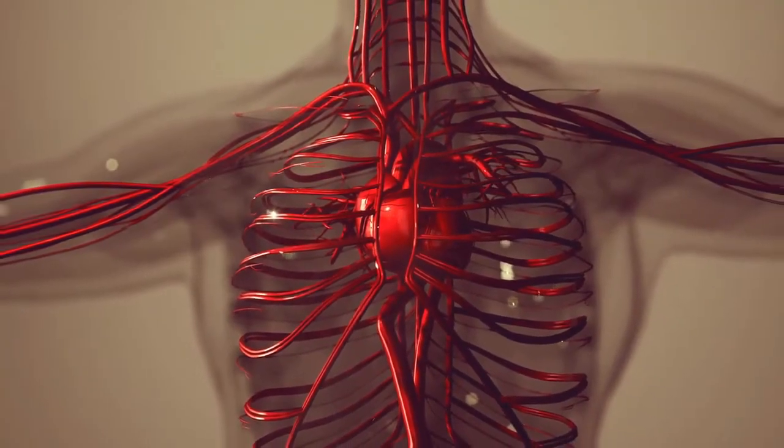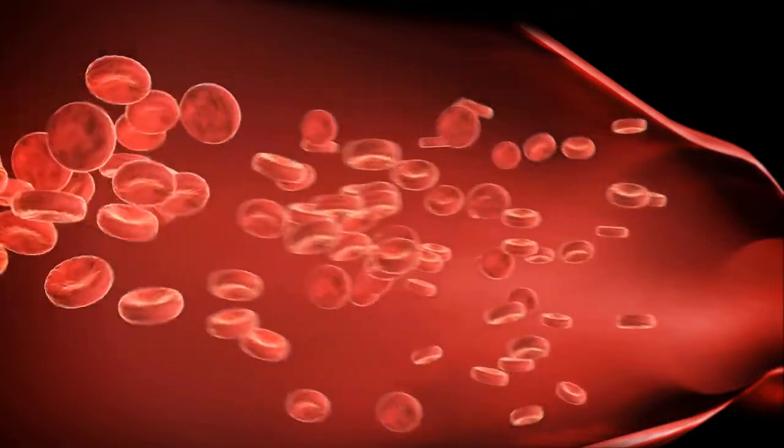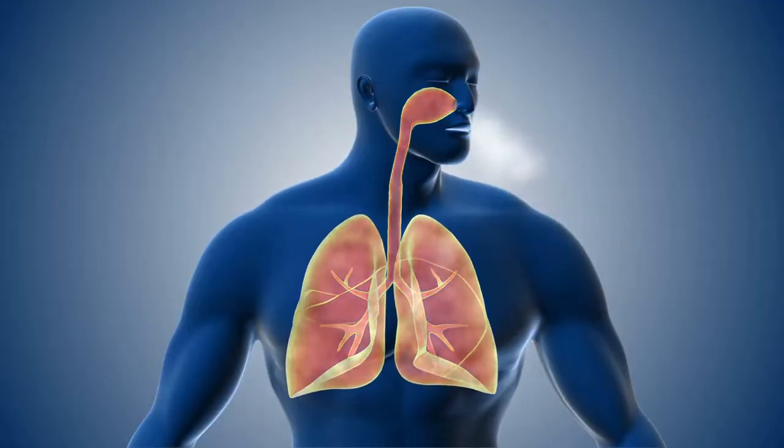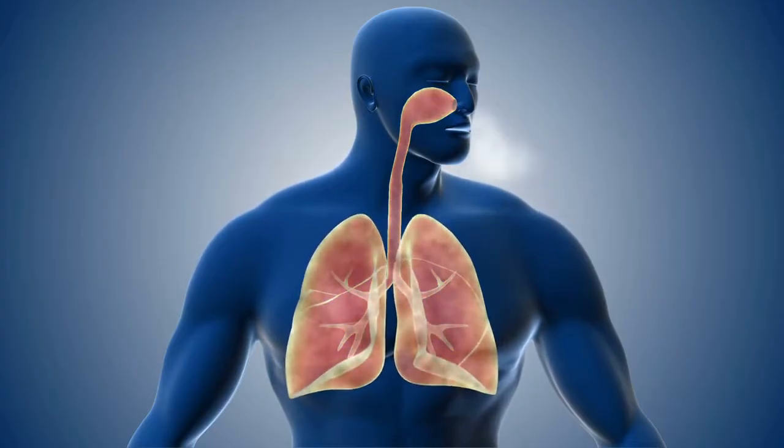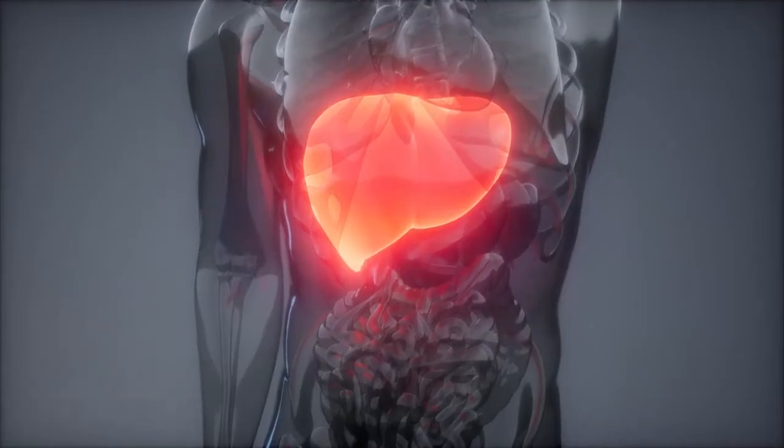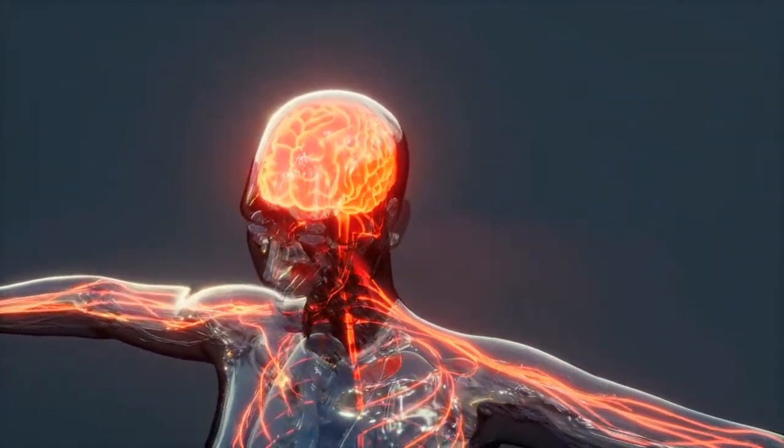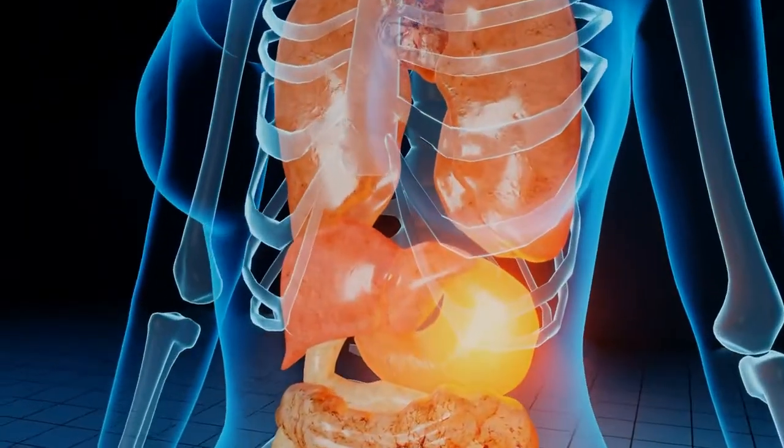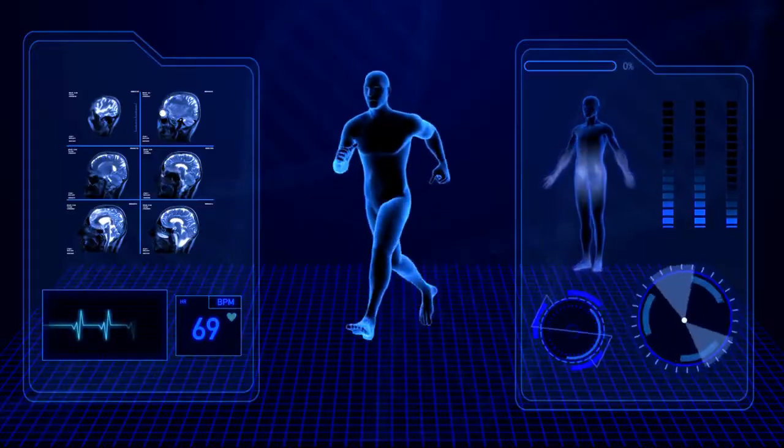For instance, the heart pumps blood, the lungs take in oxygen, the liver filters toxins, and the brain controls all our actions. Each organ is unique, but they work together as a team to keep us alive.